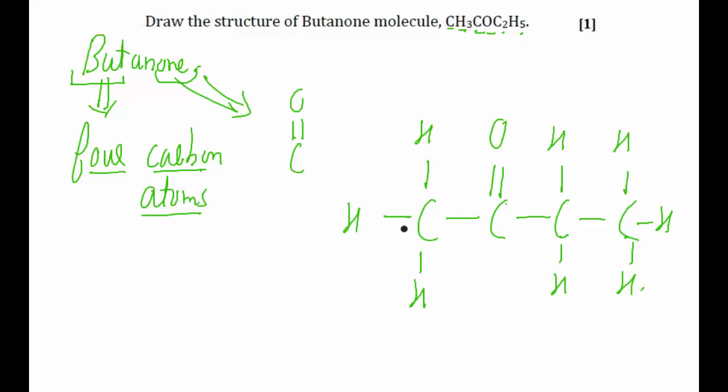So this will be the structure of butanone. This is a ketone with four carbon atoms. That is why the name is called butanone. 'But' means four, 'one' means it is a ketone.